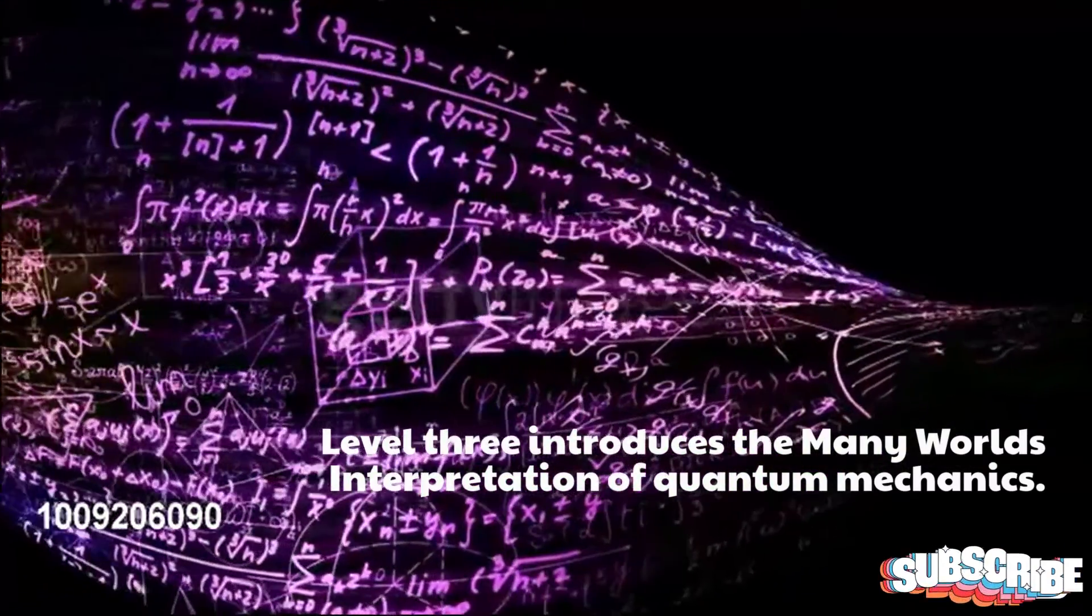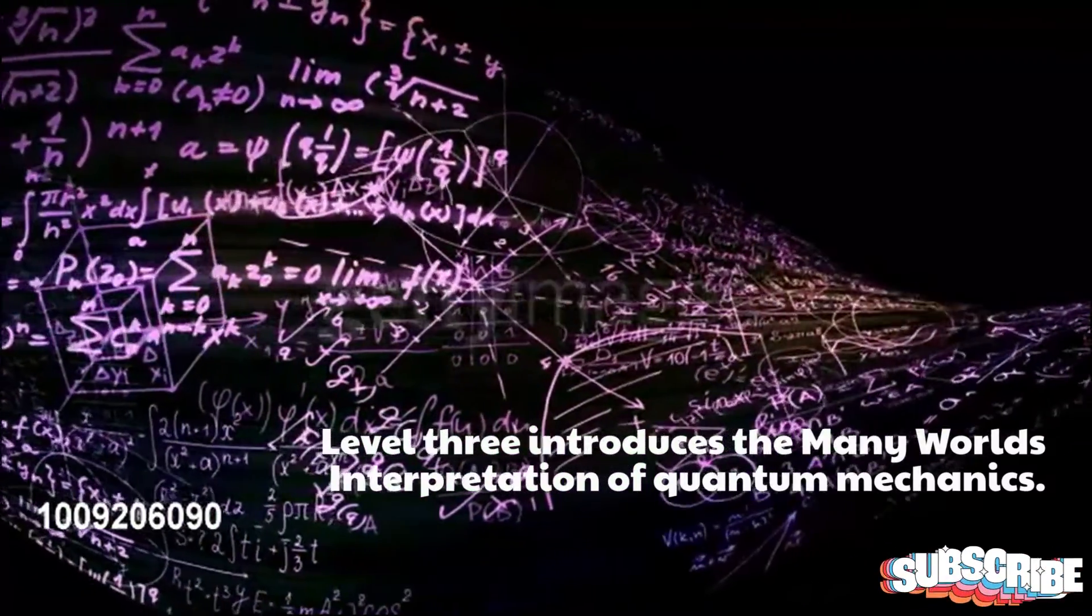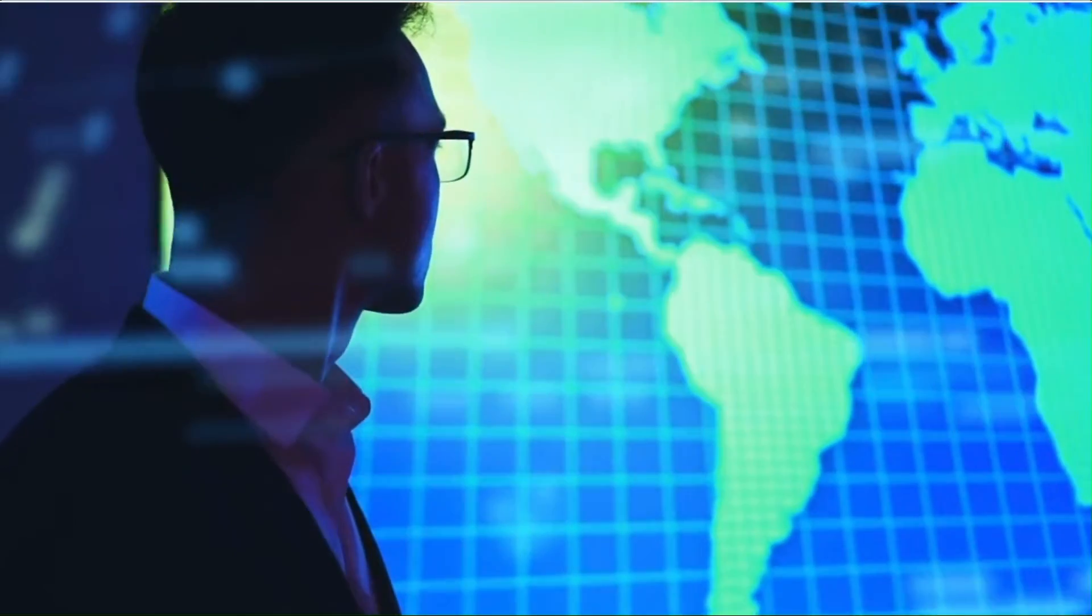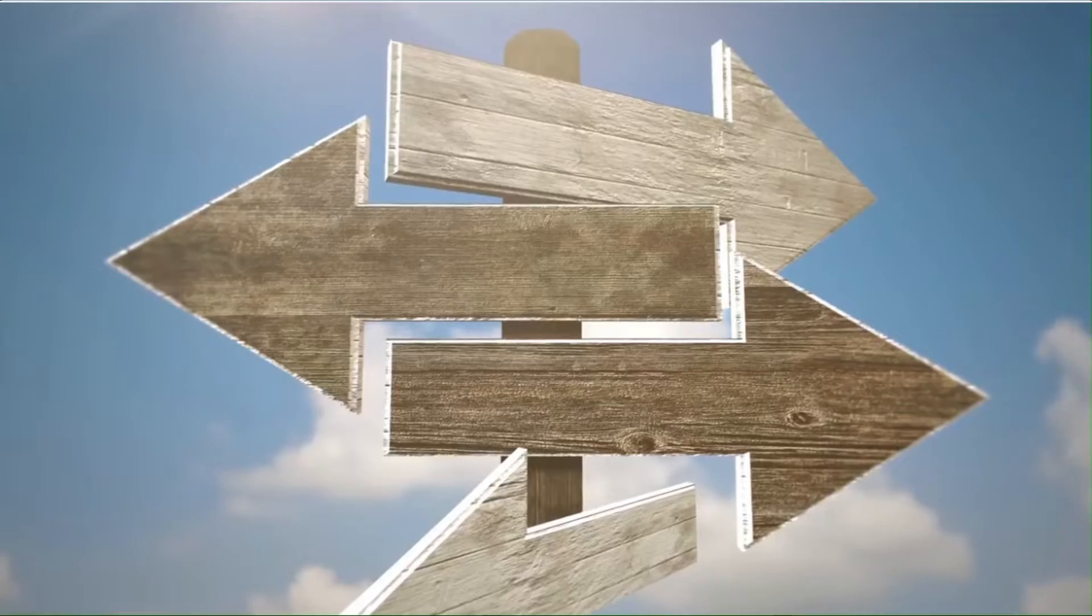Level 3 introduces the many worlds interpretation of quantum mechanics. In this interpretation, certain observations cannot be precisely predicted, leading to a range of possible observations, each corresponding to a different universe.